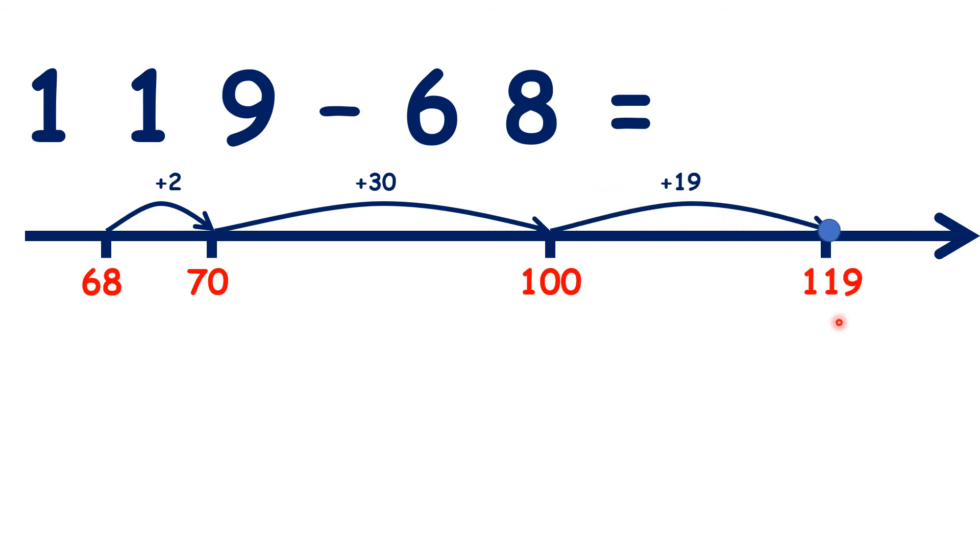So we need to work out 2 plus 30 plus 19. But we might find it easier to do 19 plus 2 plus 30. So we can do 21 plus 30, because 19 plus 2 is 21. Now, 21 plus 30 is 51, so that's our answer.